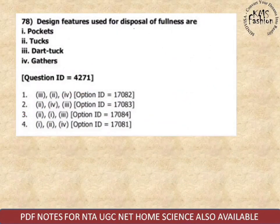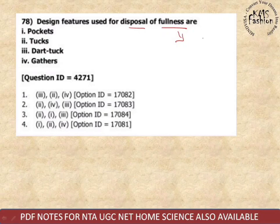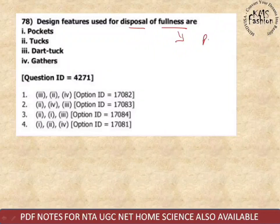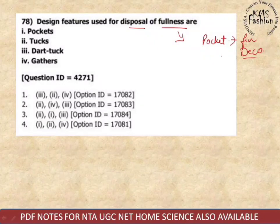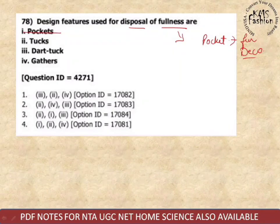Next question: design features used for disposal of fullness. If you have studied the dart-equivalent video, you will know what fullness is, so this question is very simple. The options include pocket tuck, dart tuck, and gathers. Pocket is functional as well as decorative — we do not use pockets for fullness. So just eliminate pocket from the first option.